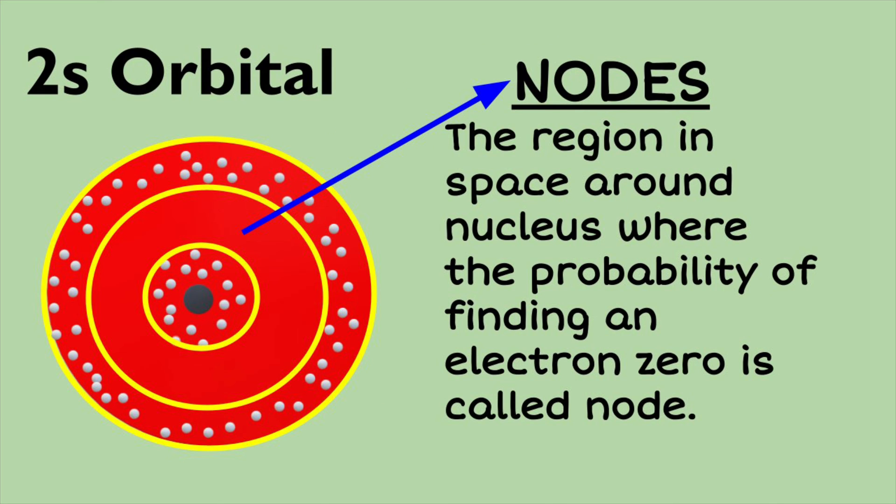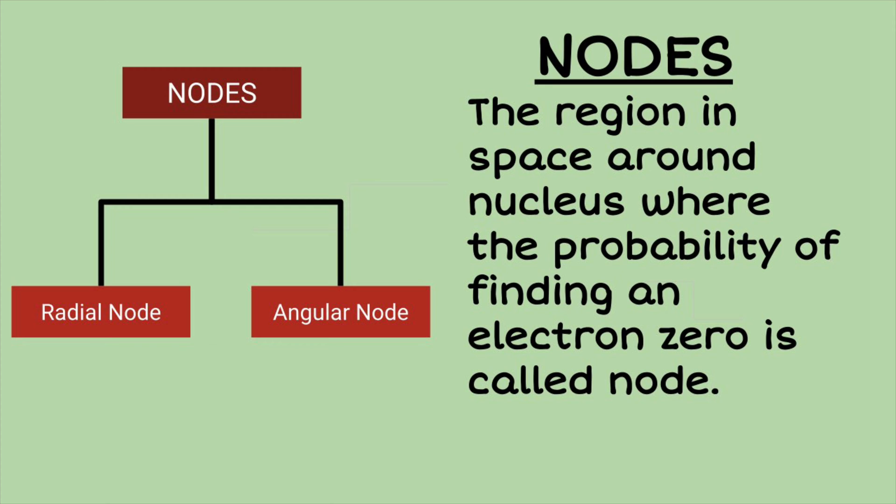First let us see what is a node. The region in space around the nucleus where the probability of finding an electron is zero is called a node. There are two types of nodes: radial node and angular node.